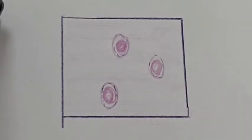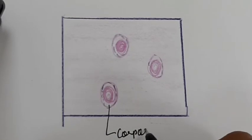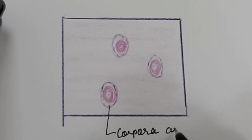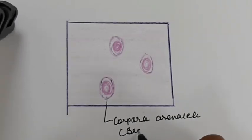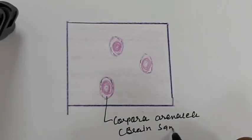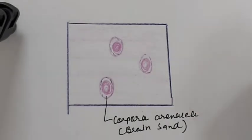The pineal gland is an endocrine gland, so it pours its secretion into the blood. There are many blood capillaries present. The pineal gland weighs about 0.1 to 0.2 grams.